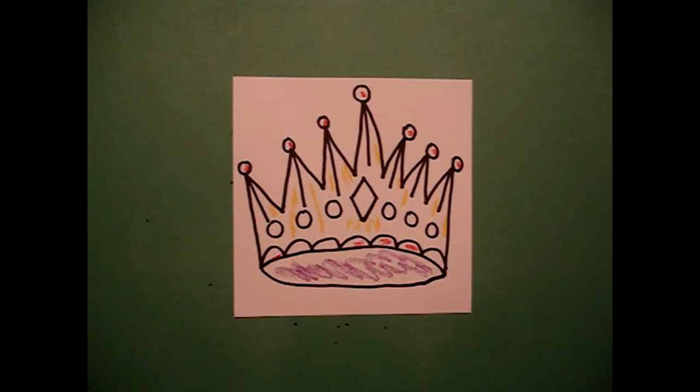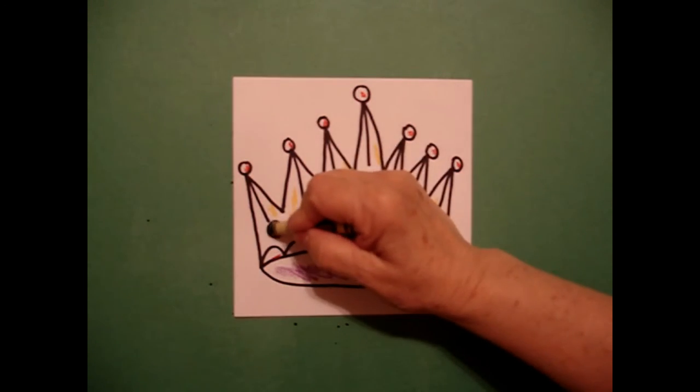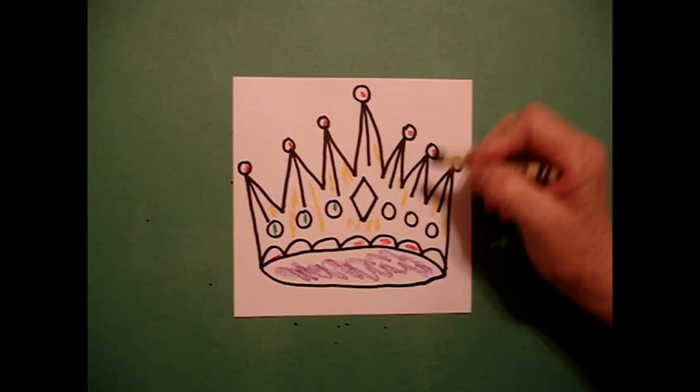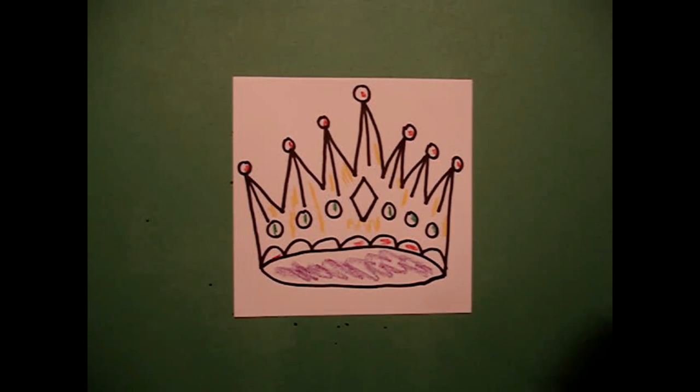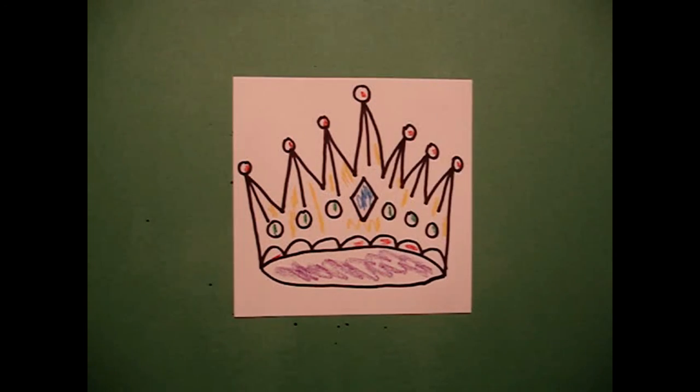Then I'm going to come in, color these baby circles green. Let's pretend they're emeralds. And right in the center I'm going to make a blue, and maybe that's a sapphire.